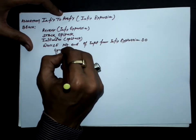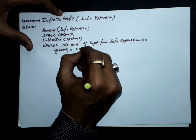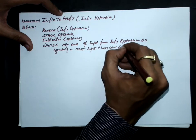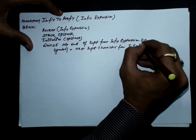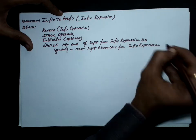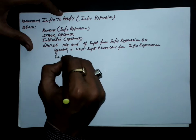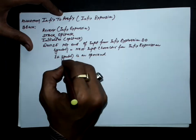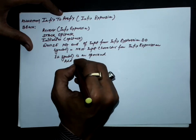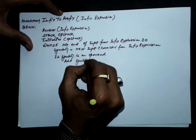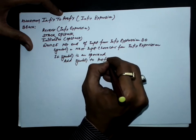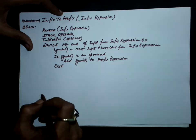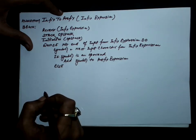Read the next character into symbol: symbol equals next input character from infix expression. If the symbol is an operand, add this symbol to the prefix expression. Otherwise, the symbol is an operator.